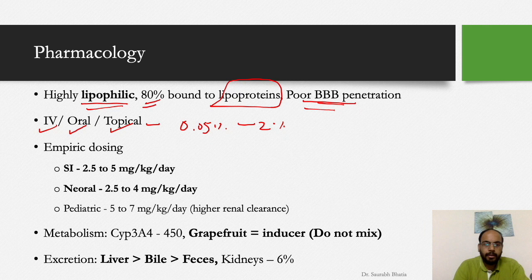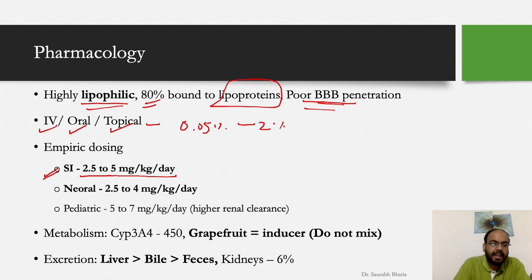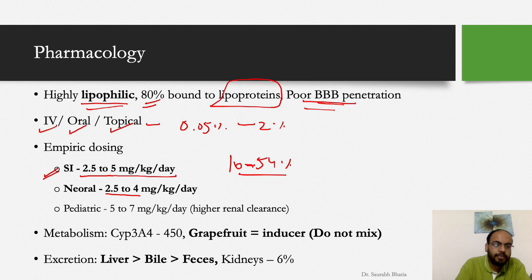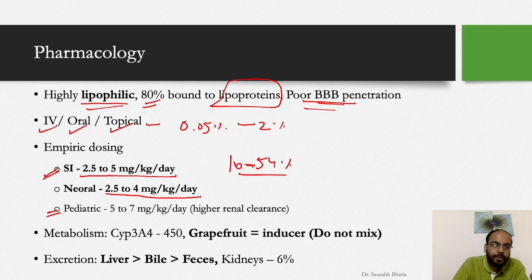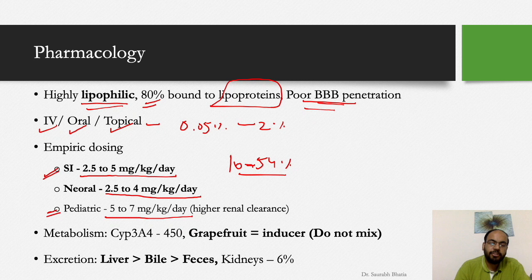Empiric dosing for Sandimmune is 2.5–5 mg/kg/day for dermatological indications. Because Neoral is 10–54% more bioavailable, its empiric dosing is slightly less at 2.5–4 mg/kg/day. In the pediatric population, the empiric dosing is 5–7 mg/kg/day because children have higher renal clearance of cyclosporine, so the dose per day is higher.